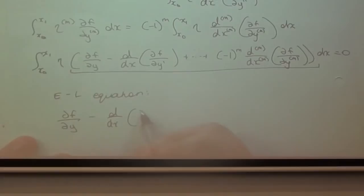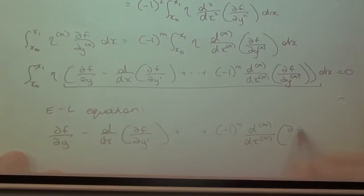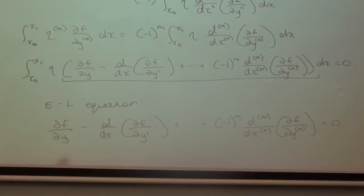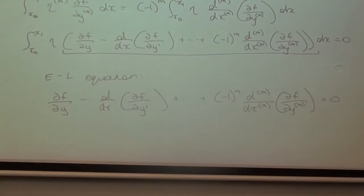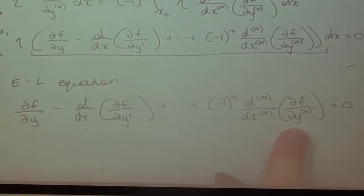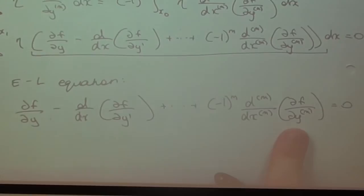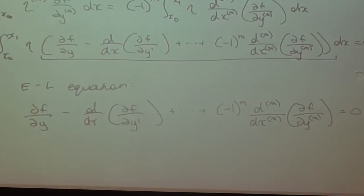A couple of things to notice about this equation: the first two terms are exactly the EL equation Kevin showed us, so those terms are unchanged. As we add higher derivatives into the integrand, we just add extra terms onto the EL equation. Also, we can now see why we need 2m constants: the partial derivative of f with respect to y^(m), when differentiated m more times, gives a differential equation of order 2m, which requires 2m constants to solve. That concludes the derivation.